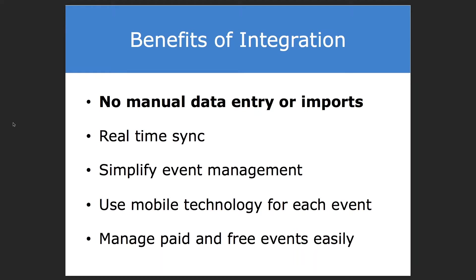Let's jump in and see how this works. We're going to run two scenarios. First, we're going to add a new attendee — a registration for an event. This event could be paid or free. I've set this event up to be free, but it's going to simulate a paid event, actually creating a gift in eTapestry as a paid event. Then we're going to check that person into the event and show the creation of a journal contact that they actually attended.